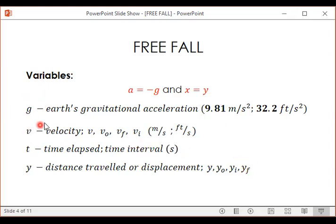So we have g, Earth's gravitational acceleration. This is constant: 9.81 meters per second squared in metric system and 32.2 feet per second squared in English system.